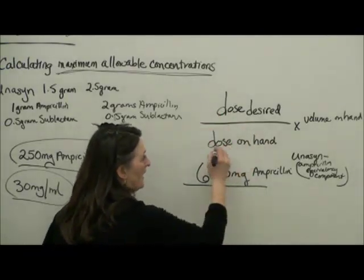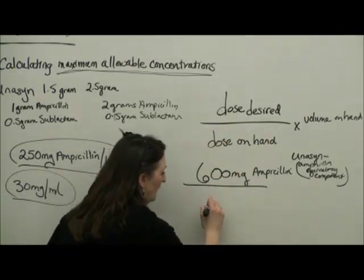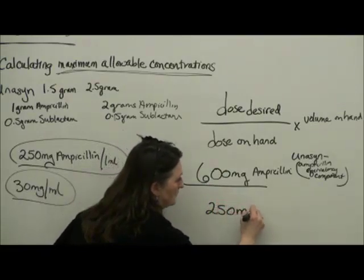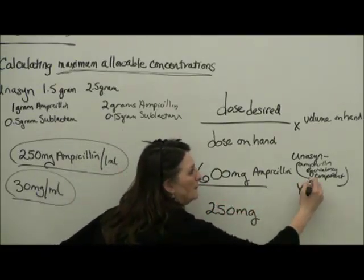So, what we want, our dose desired, divided by what we have, we have 250 milligrams in one milliliter.